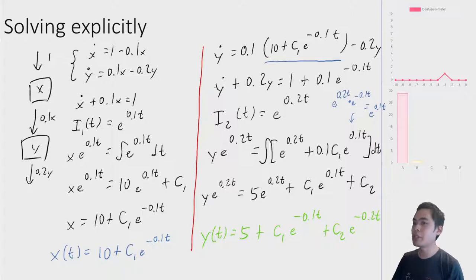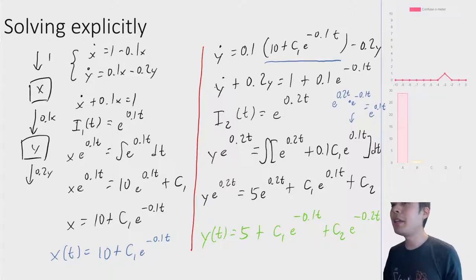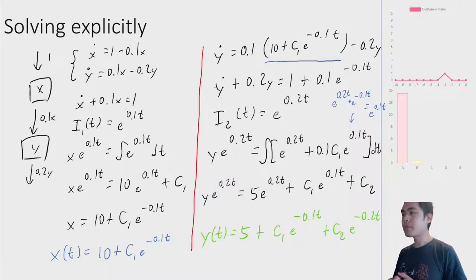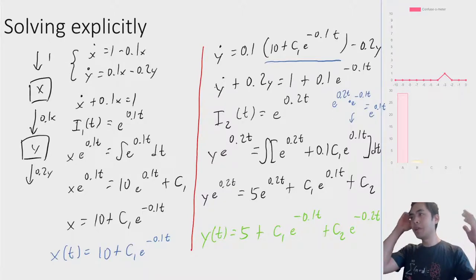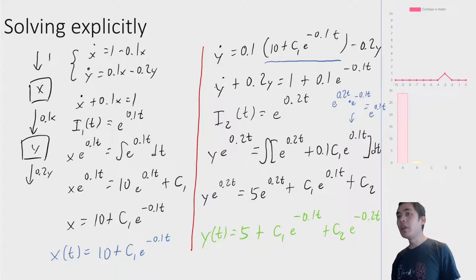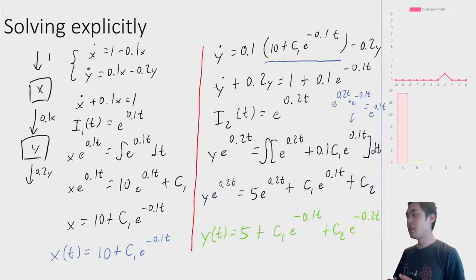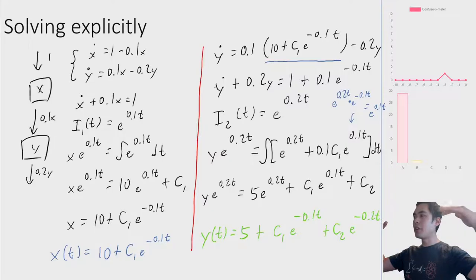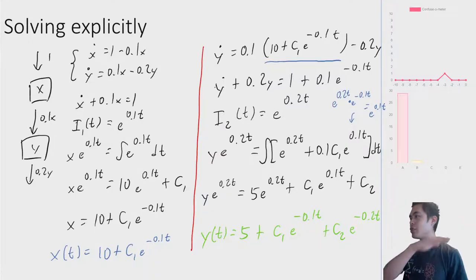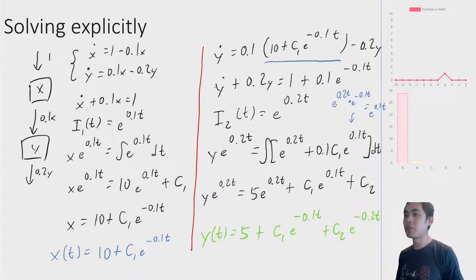The basic idea is we can understand multi-compartment behavior by first solving for one variable and then solving for the other. This won't always work — if the variables are mutually dependent, you need to solve a full system of ODEs. But for these simple linear forward-chain examples, you can solve sequentially.